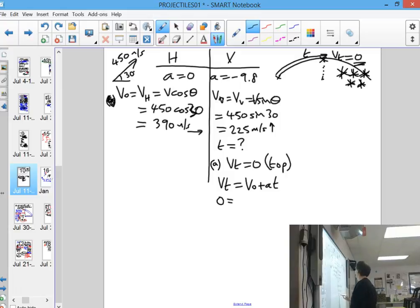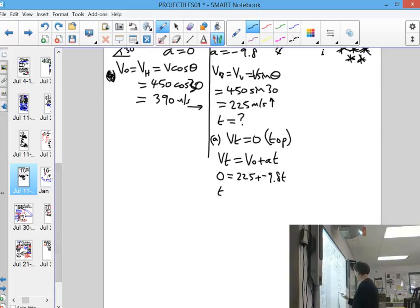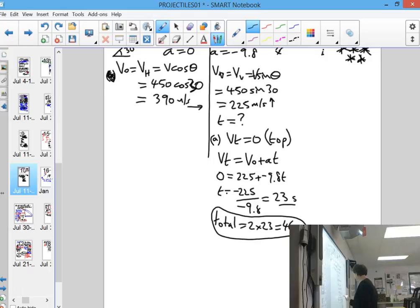So now we've got information to do this. We've got VT equals VO plus AT. So you've got zero equals 225 plus minus 9.8T. So you should find that T will be minus 225 over minus 9.8. Now that's only half. So to get the total, you use double that. So the total would be 2 times 23. That's the second mark. Don't get doubles here, because it's only halfway.